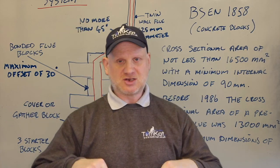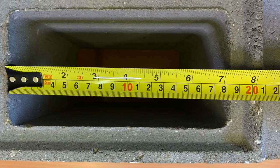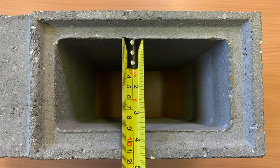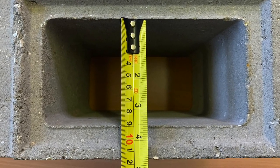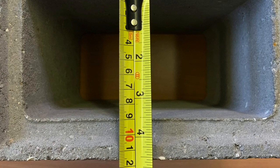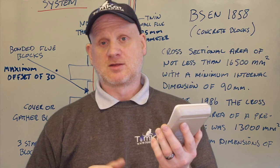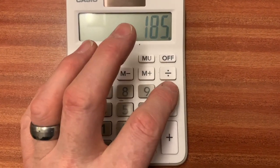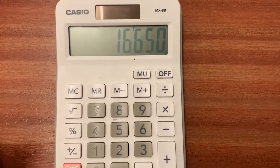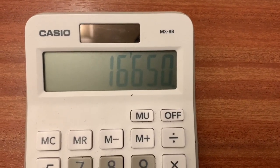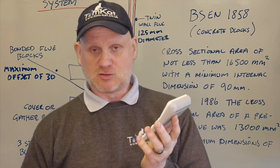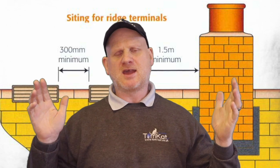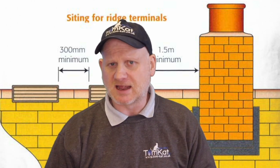Let's measure these blocks. This flue block is 185mm long and has a minimum width of 90mm. So 185 times 90 gives us a cross-sectional area of 16,650mm² — which means it's big enough and meets the current standard.